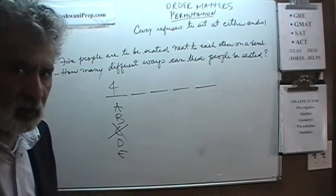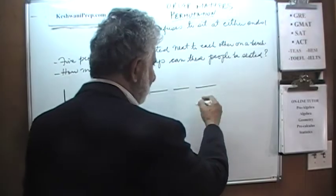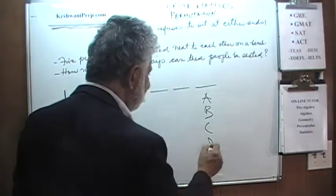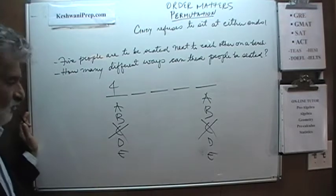Now let's do the other end. Always take care of the conditions first. Obviously Cindy cannot sit here. We have A, B, C, D and E, five people. Cindy does not want to sit at the end. Let's pick one person here and decide who is going to sit here. It makes no difference. I am going to put Mr. A on this spot so A is already gone.